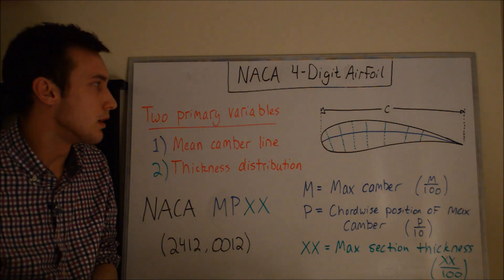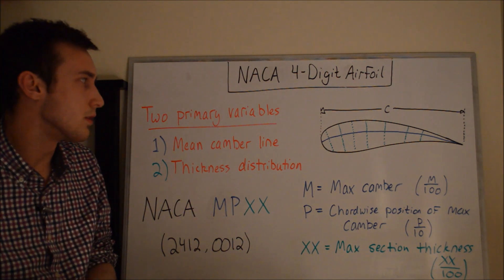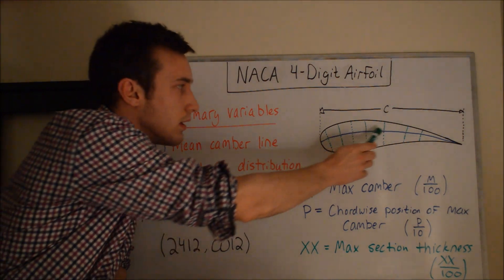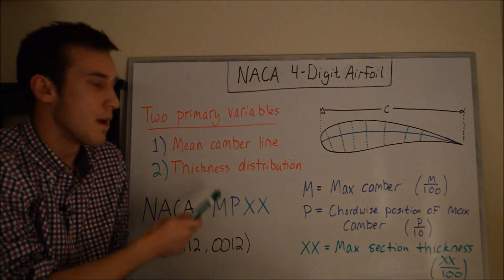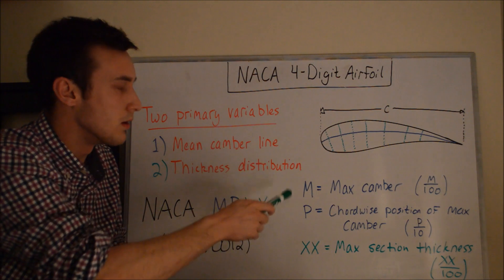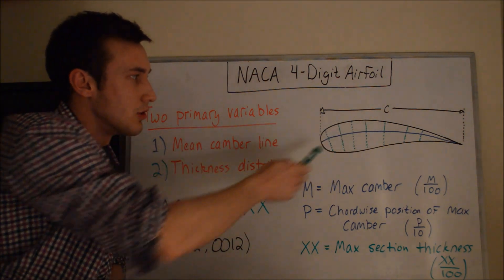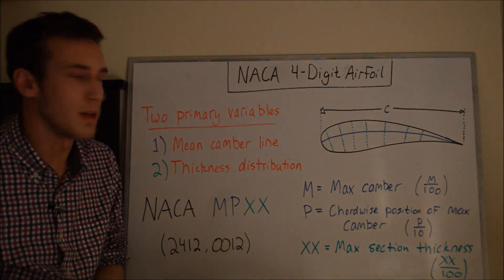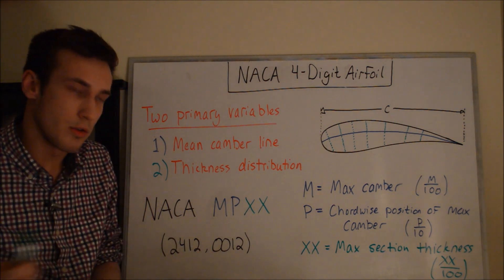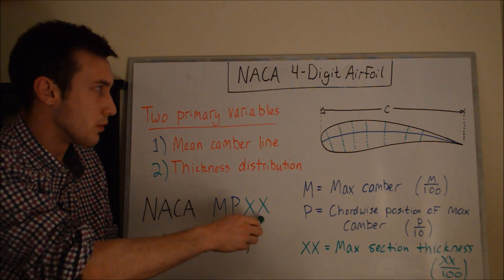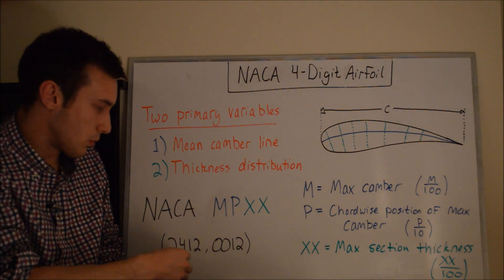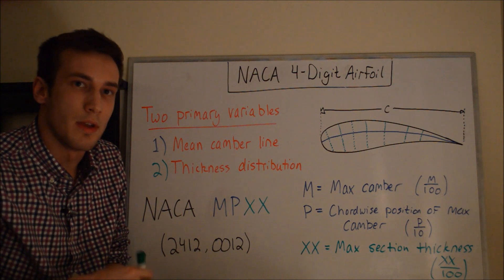The NACA four-digit airfoil is a geometric description of an airfoil and there are two primary variables that describe the geometry. The first is the mean camber line shown in blue, and the second is the thickness distribution above and below the mean camber line shown in the green dotted lines. C is the chord length of the airfoil. In the literature you'll see the general formula looks like NACA followed by four digits — for example a 2412 or a 0012.